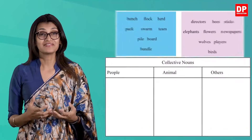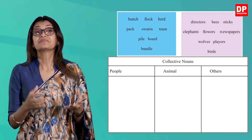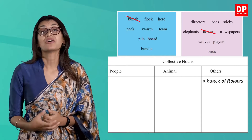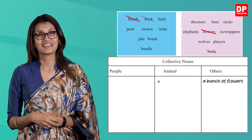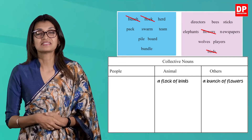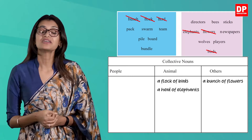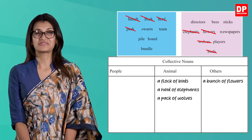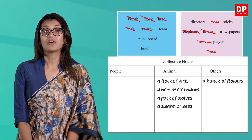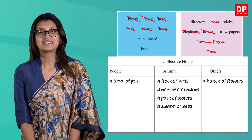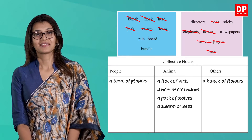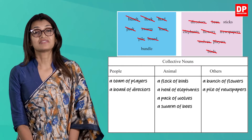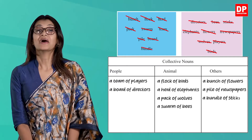You are asked to form collective nouns using the words from the two boxes. A bunch of flowers. A flock of birds. A herd of elephants. A pack of wolves. A swarm of bees. A team of players. A pile of newspapers. A board of directors. A bundle of sticks.